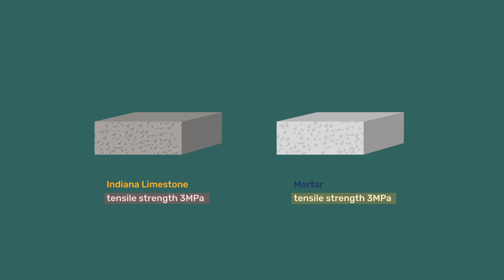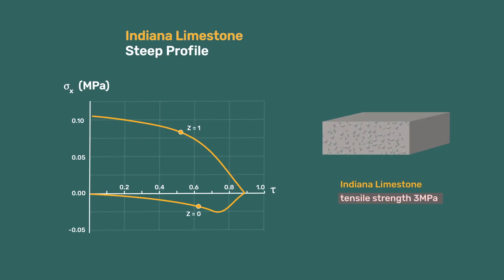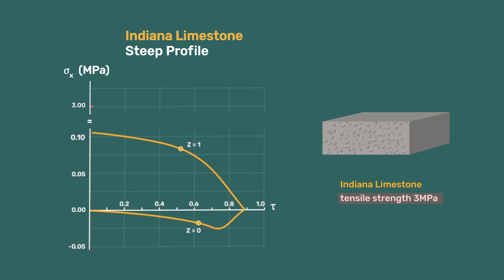Both have tensile strengths of about 3 MPa, so they would both crack if the tensile drying stresses exceed that value and possibly micro-crack if they are somewhat lower. Let us start with the Indiana limestone. Using the steep profile representing fast drying, the maximum tensile stress is only about 0.1 MPa, and the value is even lower for slow drying. Thus, for this limestone, no damage will occur even under harsh drying conditions.